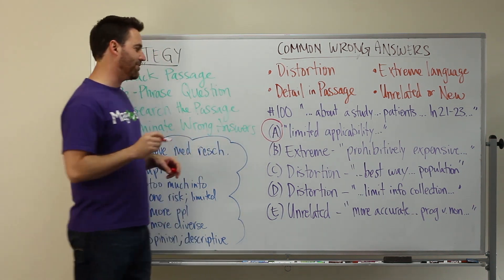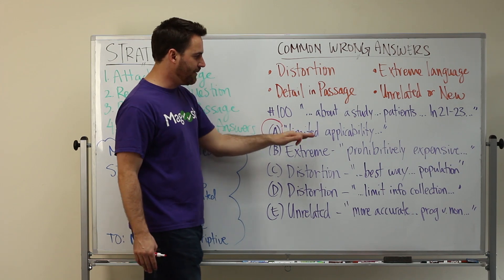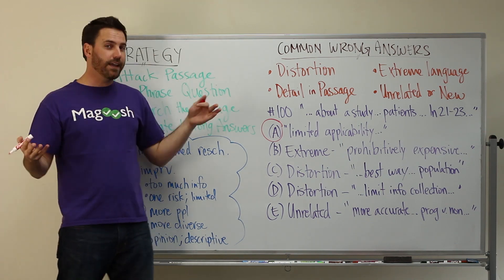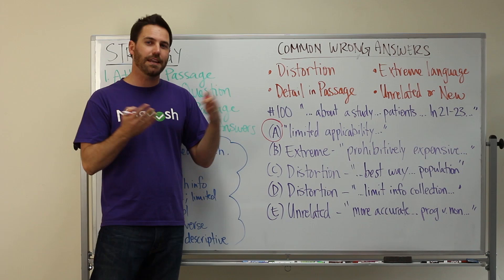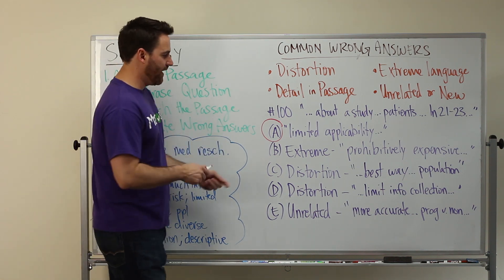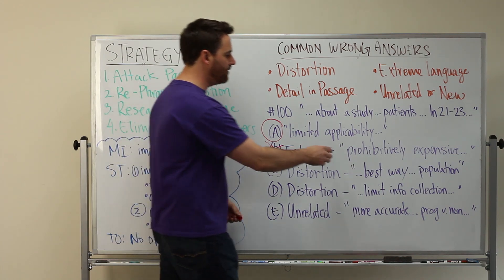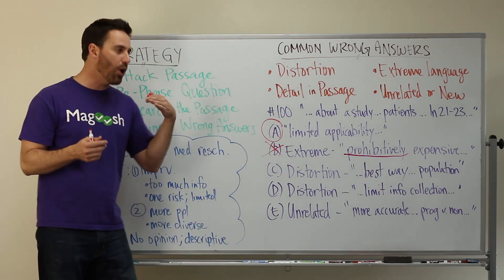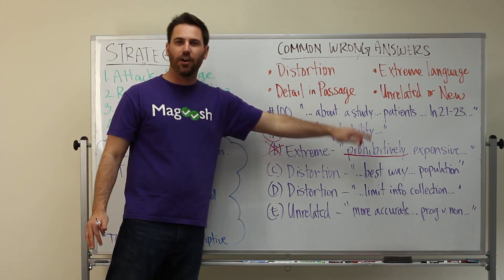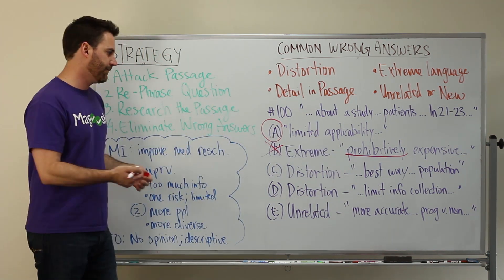Answer choice A is actually the right answer. It says that with these patients you have limited applicability, which is true — you have a small group, a limited subset of people in the population, so the results can only be applied in a limited way. That's an easy inference to make. B, on the other hand, is extreme. It says it would be prohibitively expensive. We have no idea if it would be prohibitively expensive — we know it might be expensive, but we don't know if it's so expensive that you can't even do it. So we're going to eliminate B.